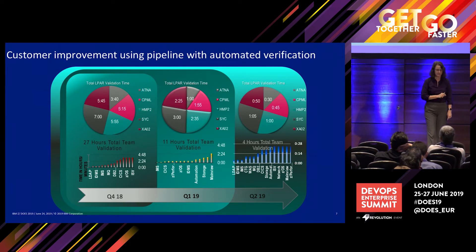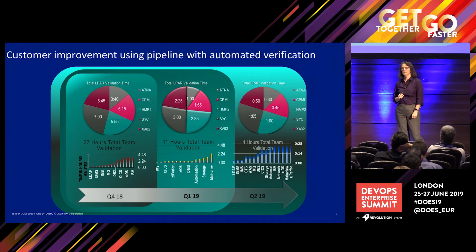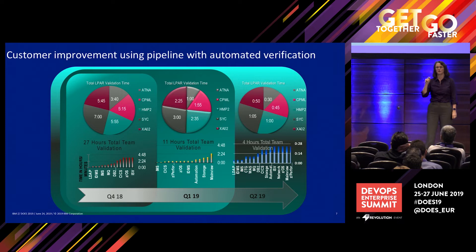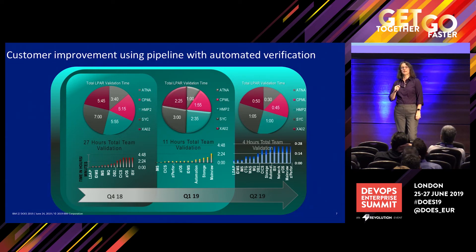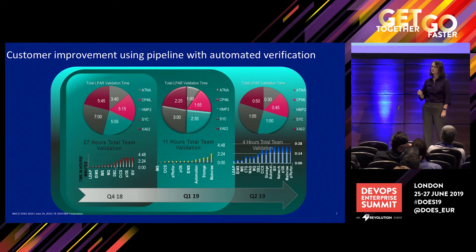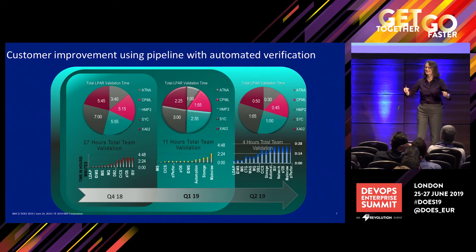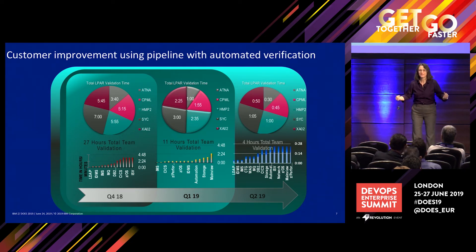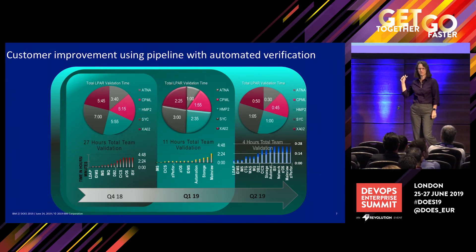The idea of this area is that customers and anybody can contribute their own automation. We're building up an open source community around infrastructure as code written in ways that can be shared and easily consumed by the current generation of developers coming out of college — not just those of us who know JCL or Rex. This is all done in Groovy, and it's available externally so you can go play. The sample was submitted by a customer — an insurance company — that recently presented at a conference.